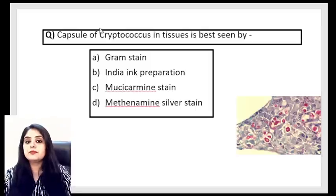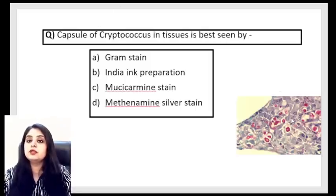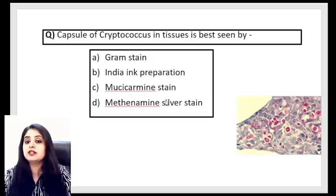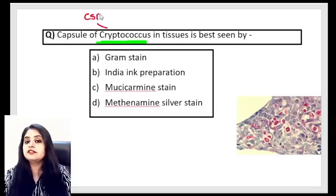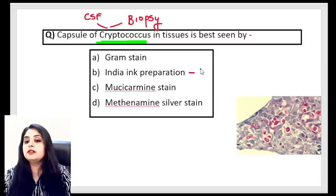Next question: 'Which of the following is not dimorphic?' The answer is Cryptococcus neoformans — it is not dimorphic. Dimorphic means 'di' = two, 'morphic' = morphology — it exists in two forms: yeast and mold. The yeast form is tiny, and the mold form looks like hyphae.